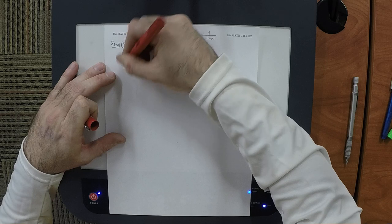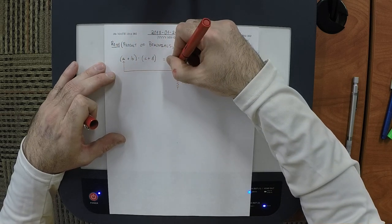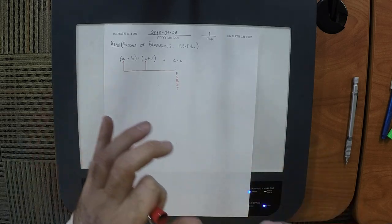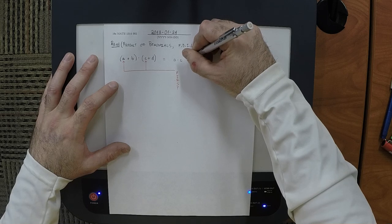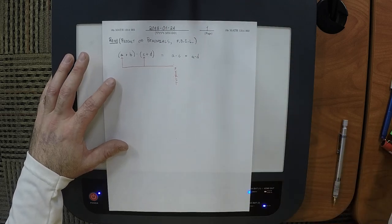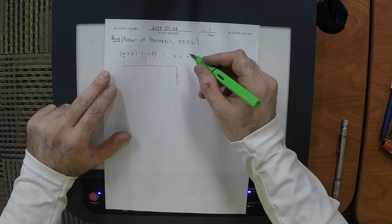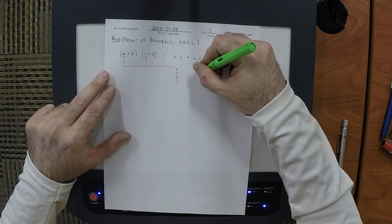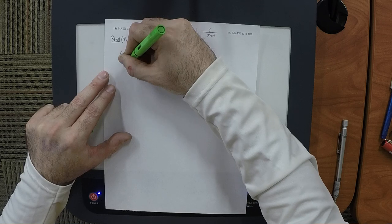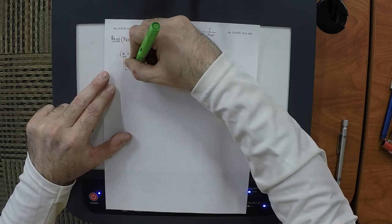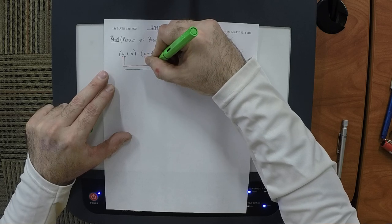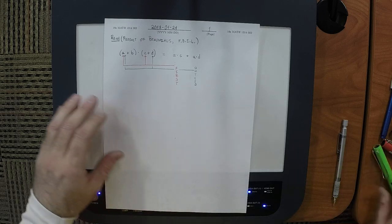In the first binomial, A is first. And in the second binomial, C is first. So this one is referred to as the F term. What's the next term? It is A·D — those are its factors. And its name? Outside — starts with the letter O. They're called outside because those individual factors are on the outside. There's A·D — outside.